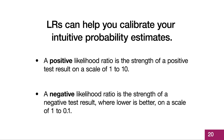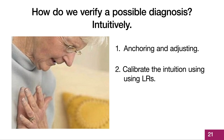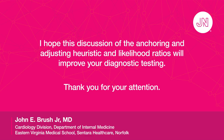Think of a positive likelihood ratio as the strength of a positive test result on a scale of roughly 1 to 10, and a negative likelihood ratio as the strength of a negative test result where lower is better on a scale of roughly 1 down to 0.1. We use a heuristic called anchoring and adjusting to estimate pretest and post-test probabilities, and we can calibrate our intuition using likelihood ratios to improve the accuracy of our probability estimates. It is important to make accurate probability estimates because the goal is to use test results to reach a conclusion strong enough to act upon in order to provide effective and timely treatment. Thank you for your attention.